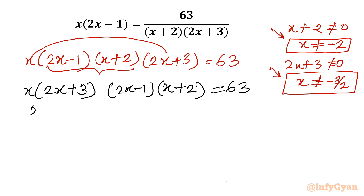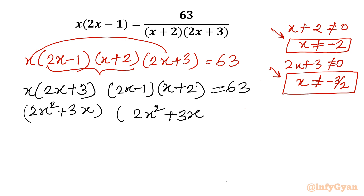Expanding the first group: x times (2x plus 3) gives 2x squared plus 3x. Expanding the second group: (2x minus 1) times (x plus 2) gives 2x squared plus 4x minus x minus 2, which is 2x squared plus 3x minus 2. So the equation is (2x squared plus 3x) times (2x squared plus 3x minus 2) equal to 63.